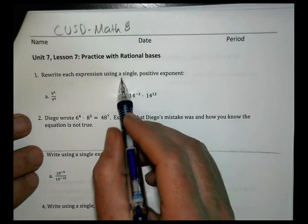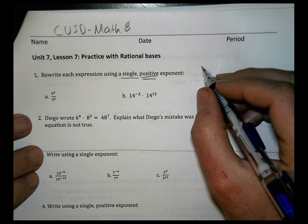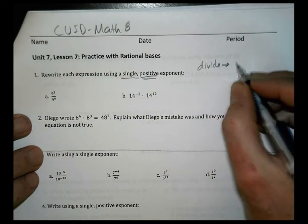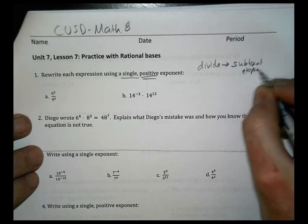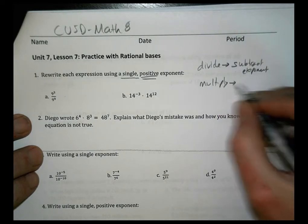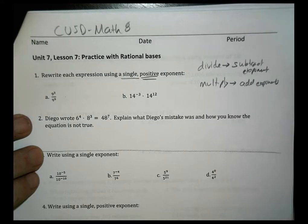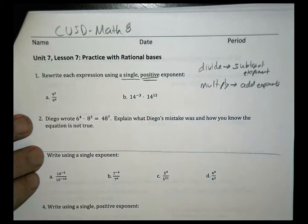We're going to rewrite each expression using a single positive exponent. So just remember our rules here. When we're dividing exponents, we're going to subtract the exponents from each other. When we are multiplying, it means we're going to add the exponents together. We see we're dividing here, multiplying there, so make sure we have that going the right direction.